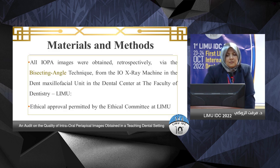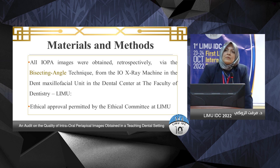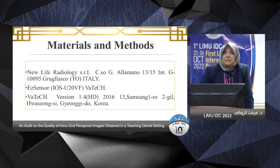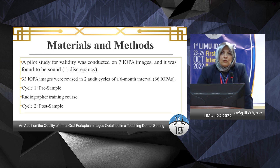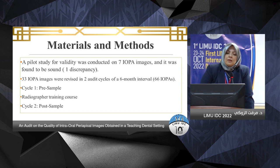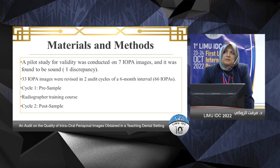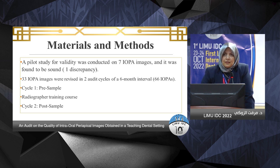Materials and methods: images were retrieved retrospectively from the archive of the dental clinic and dental faculty at LIMO. Ethical approval was granted by the ethical committee at LIMO. All images were obtained from the same panoramic machine with the same sensor and software. A pilot study for validity was conducted on seven images and found to be sound. Then 33 intraoral periapical images were revised in two audit cycles with a six-month interval, giving a total sample size of 66 — cycle one (pre-sample) and cycle two (post-sample), with a radiographer training course conducted in between.